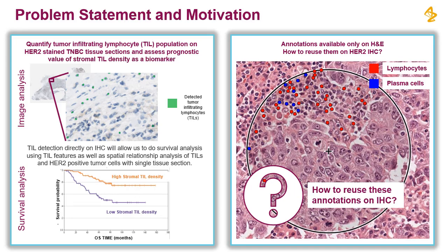Doing this task directly on an HER2-stained IHC image will allow us to quantify the HER2-related features as well as TIL features on the same tissue section. It will also allow us to perform spatial relationship analysis between HER2-positive tumor cells and TILs. Since HER2 stain does not happen on the TILs, it does not interfere with TIL detection — the HER2 stain is only present on the tumor.